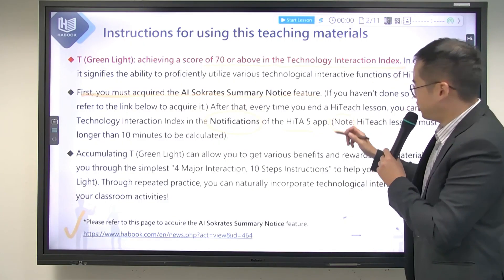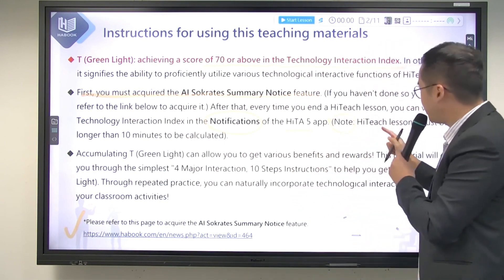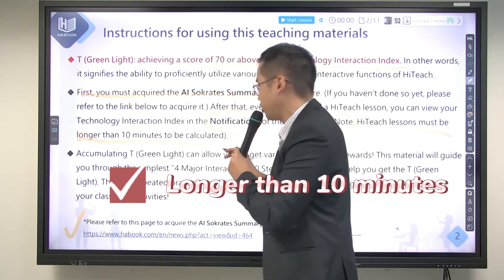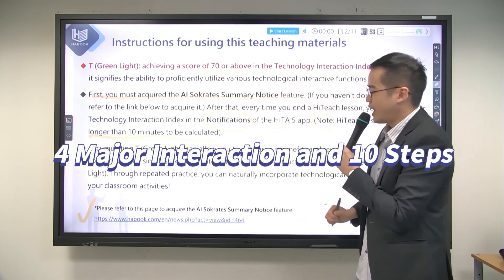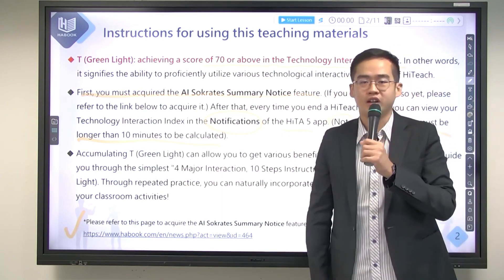Here is a note: if you want to get a T index in your HiTeach lesson, the HiTeach lesson must be longer than 10 minutes to be calculated. You have to notice that. You may wonder what's the benefit of getting a T Green Light — accumulating T Green Lights can allow you to get various benefits and rewards. So today we are using this material to guide you through the simplest 4 major interactions and 10 steps to get a T Green Light. Let's do it.